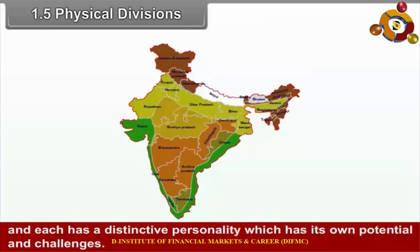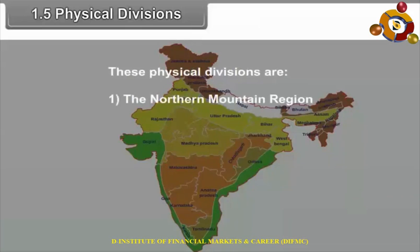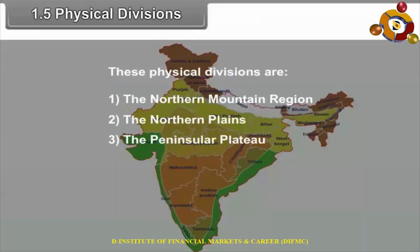The five physical divisions of India are: 1. The Northern Mountain Region, 2. The Northern Plains, 3. The Peninsular Plateau, 4. The Coastal Plains, and 5. The Islands.